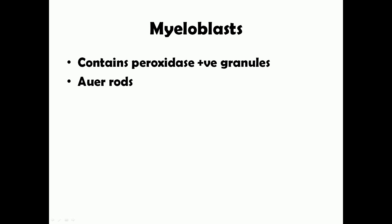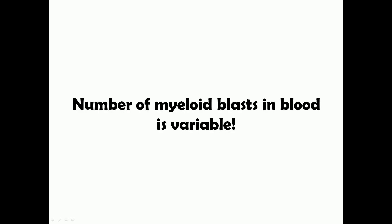If you see a question mentioning Auer rods, it is mostly AML. The number of myeloblasts in blood is variable — there can be ten thousand to one lakh myeloblasts in blood — but that does not indicate the severity of the condition. A bone marrow biopsy is needed to see the myeloblasts and determine the exact clinical picture.